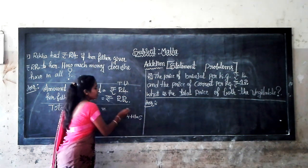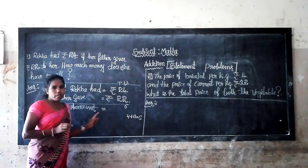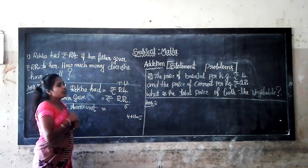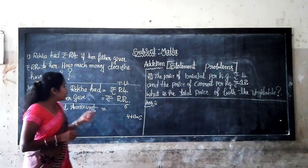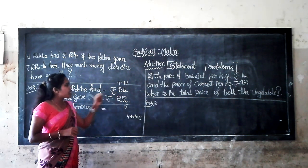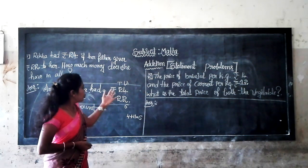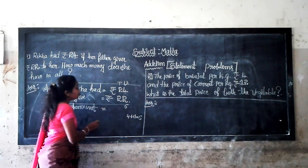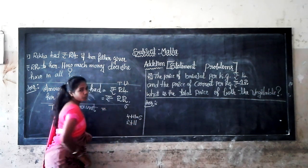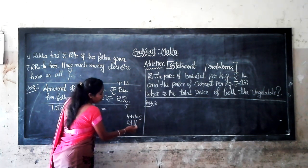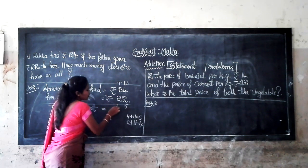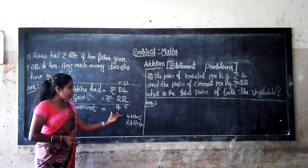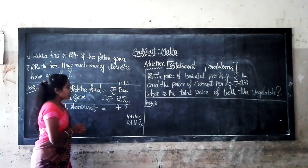Six is a single digit number, so there is no carry over. When we get a double digit number, we get a carry over. Now the next column: tens place numbers are 2 and 2. Two plus two is equal to 4. So the sum of 24 and 22 is 46.